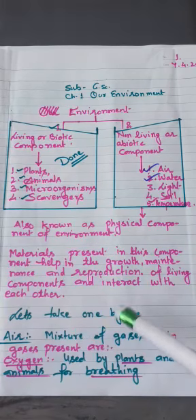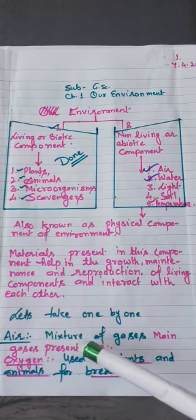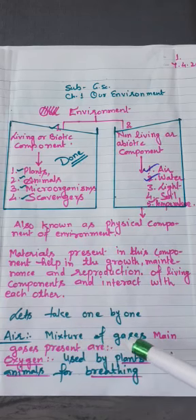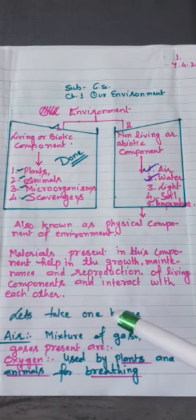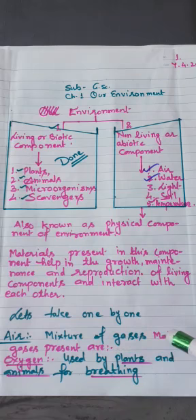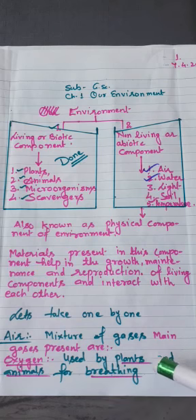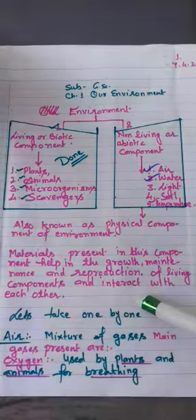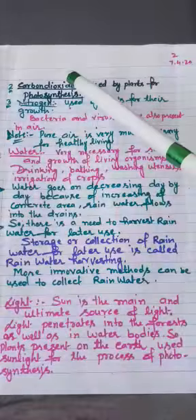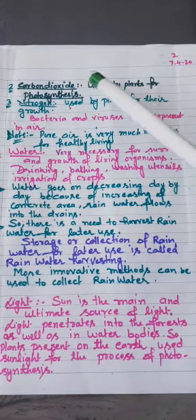Let's take these components one by one. First one is air. As you know, air is a mixture of gases: gases like nitrogen, oxygen, carbon dioxide, helium, etc. are present in it. First one I'm taking: oxygen, used by plants and animals for breathing. Come to the next: carbon dioxide present in air is used by plants for photosynthesis.